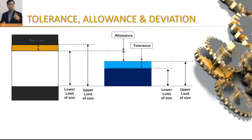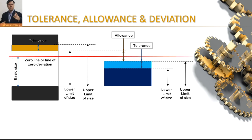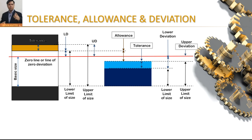The third term is deviation. Whenever we talk about deviation, we talk about basic size, and whenever we talk about basic size, we talk about the zero line — a line of zero deviation. Basic size is the reference size to which limits of size are fixed. If I subtract my lower limit from my basic size I get lower deviation; if I subtract my upper limit I get upper deviation. So my hole has two deviations and my shaft has two deviations: upper deviation and lower deviation.